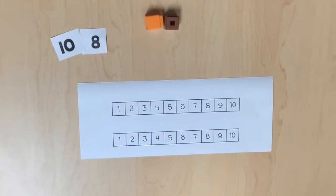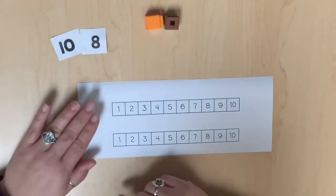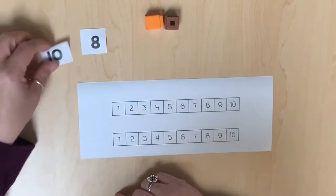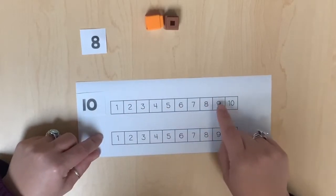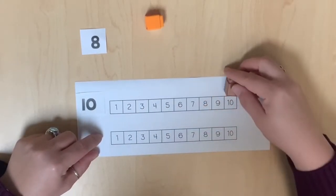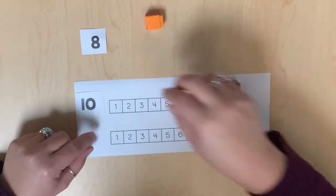As students understand how each space is counted on the number path, quantities can be represented with one linking cube. Count each space on the number path to confirm each quantity before comparisons are made.